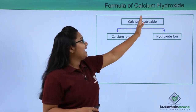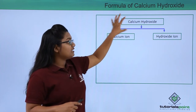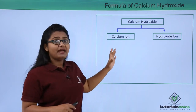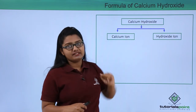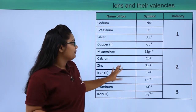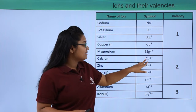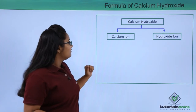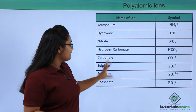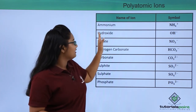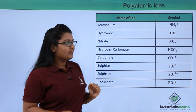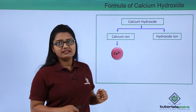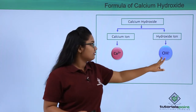Let us quickly begin and write the chemical formulae of some compounds. First, we will write the chemical formula for calcium hydroxide. Calcium hydroxide is made up of two kinds of ions: the calcium ion and the hydroxide ion. Going to our tools, calcium is represented as Ca²⁺ — a calcium ion with a valency of two — and the hydroxide ion is represented as OH⁻.